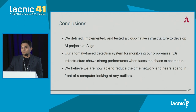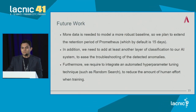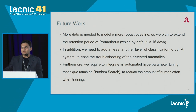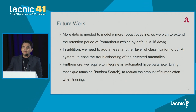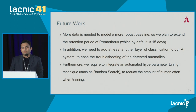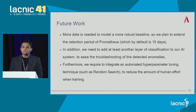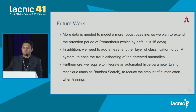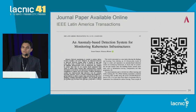Our objective was met — network engineers are no longer devoting as much time to manually monitoring the company's infrastructure. For future work, we want to increase Prometheus's default data retention period beyond 15 days. We also plan to add a second classification layer so detected anomalies can be categorized by threat type. Additionally, we want to integrate automated hyperparameter tuning, such as random search, instead of doing it iteratively and manually.